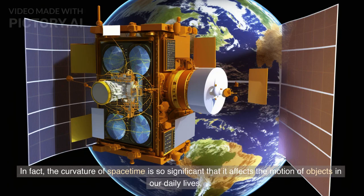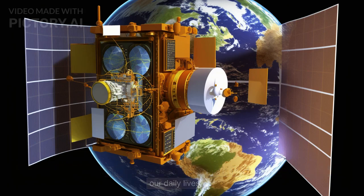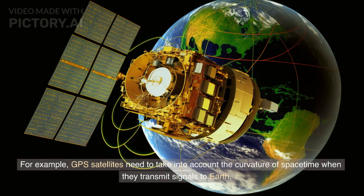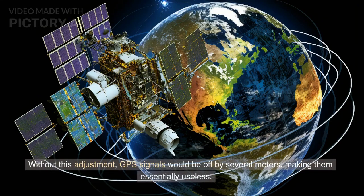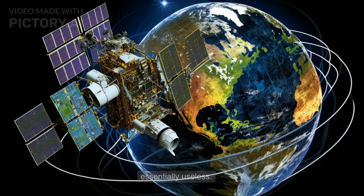In fact, the curvature of spacetime is so significant that it affects the motion of objects in our daily lives. For example, GPS satellites need to take into account the curvature of spacetime when they transmit signals to Earth. Without this adjustment, GPS signals would be off by several meters, making them essentially useless.